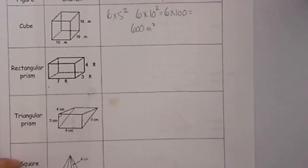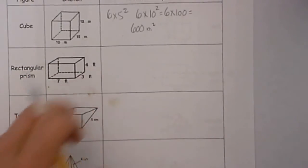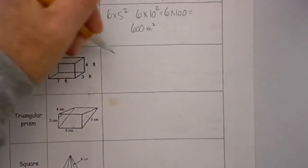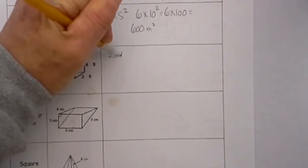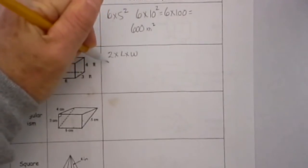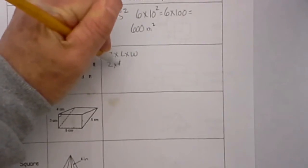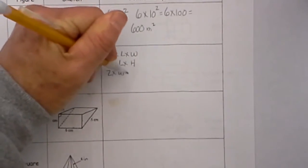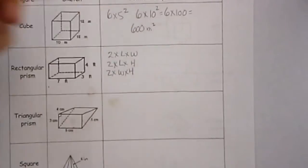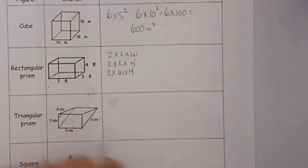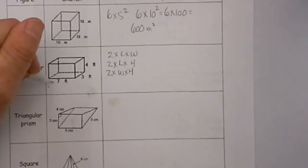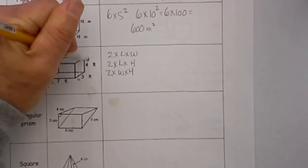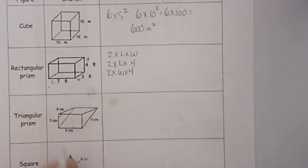With this rectangular prism, once you know the formula you just plug in the numbers. The formula is 2 times the length times the width, plus 2 times the length times the height, plus 2 times the width times the height. Let's identify each of these: 7 will be the length, 3 will be the width, and 4 will be the height.